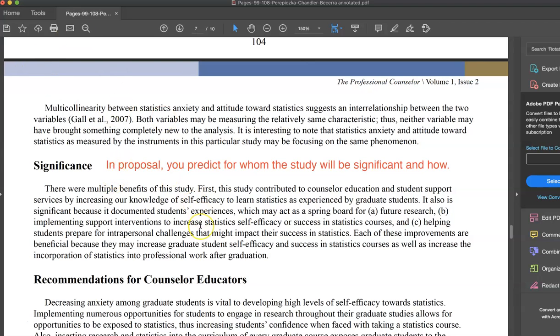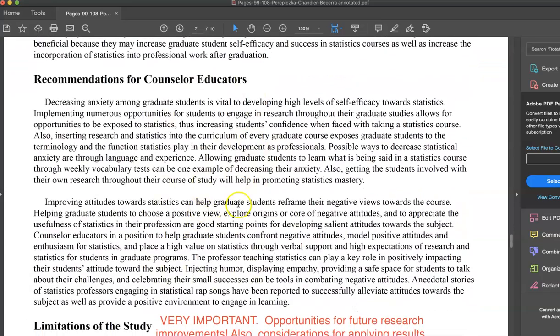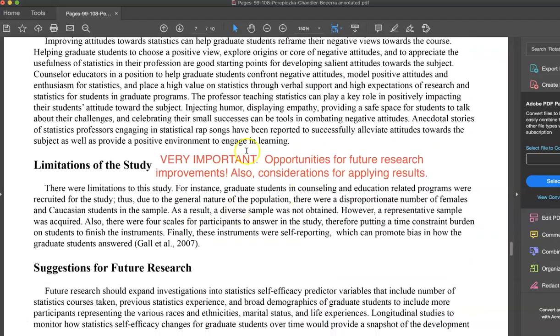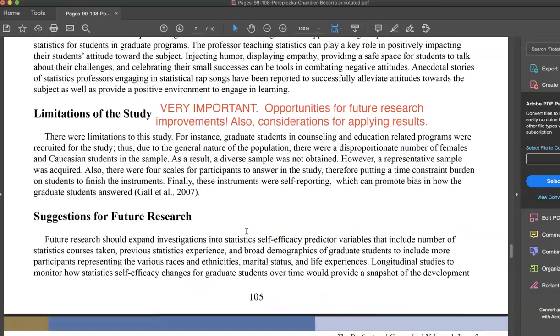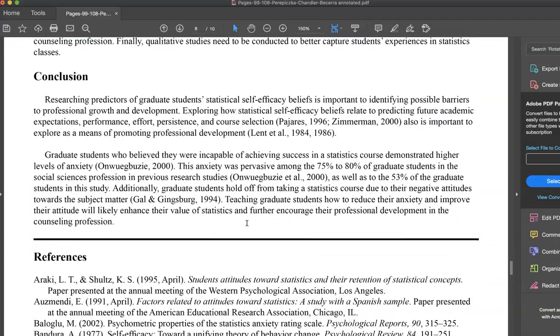And significance is who cares about it and how and why. Then they have recommendations for future practice here for counselor educators. They talk about what the limitations of their study were and how they might do that differently in future research with their suggestions for future research. And then they conclude and give their references.